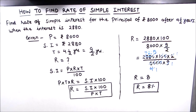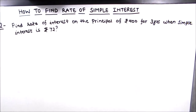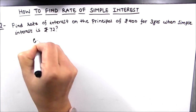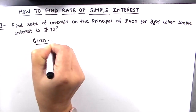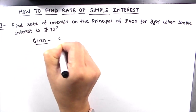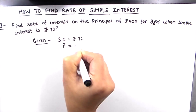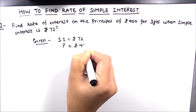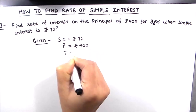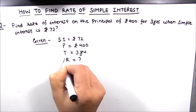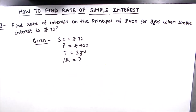Let us now solve our second example. Find the rate of interest on a principal of rupees 400 for three years when the simple interest is rupees 72. Given: simple interest = rupees 72, principal = rupees 400, time = three years, and rate of interest we need to find out.